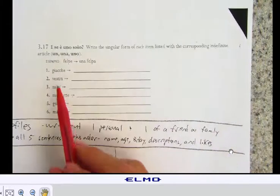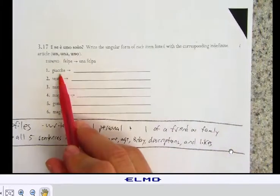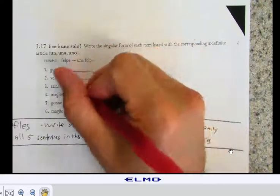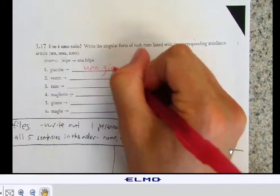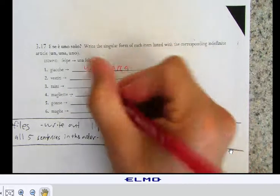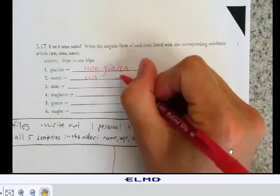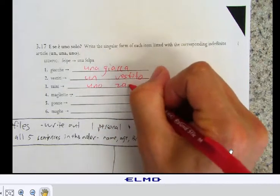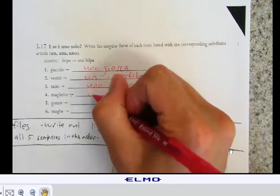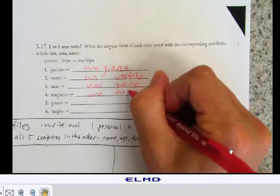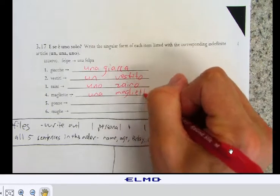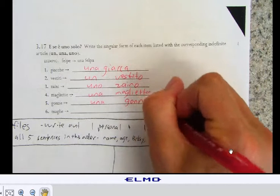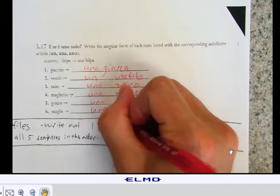This last one here, you have to recognize the plural goes into the singular. So, you're going to say here, jackets turn into una giacca. Okay. Vestiti would be un vestito. Zaini would be uno zaino. Maliete is una malietta. A gona, una gona. And a malia, a sweater, una malia.